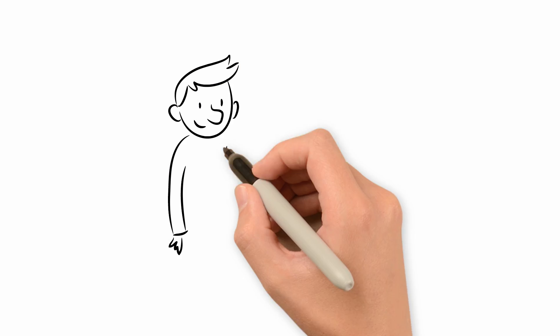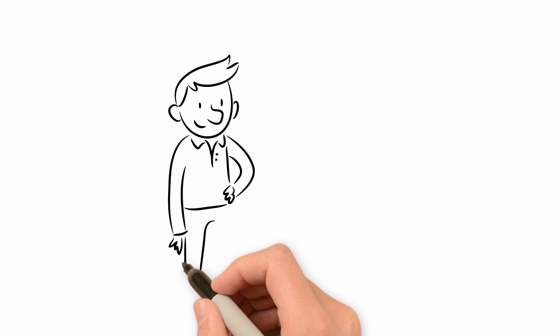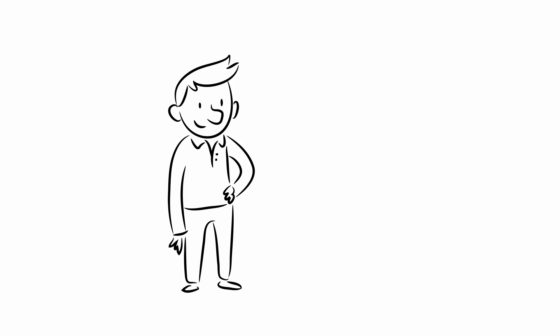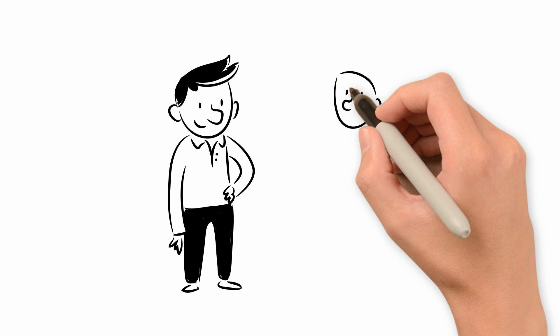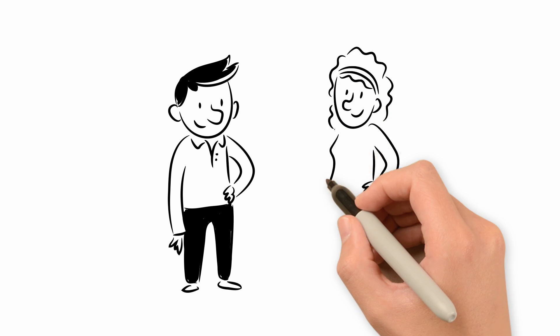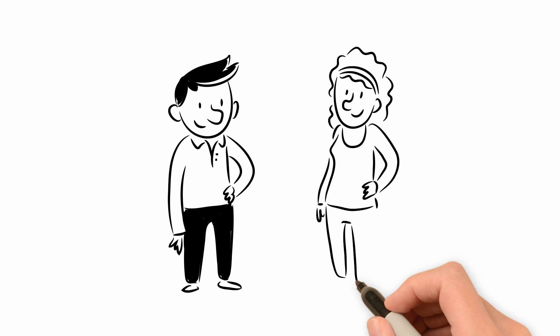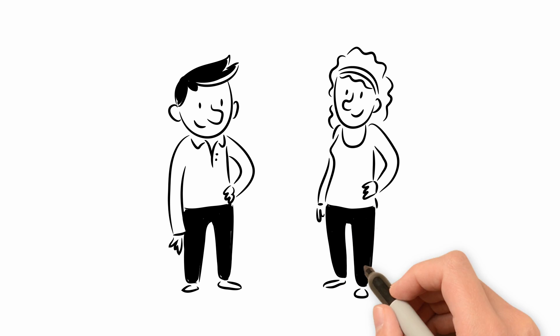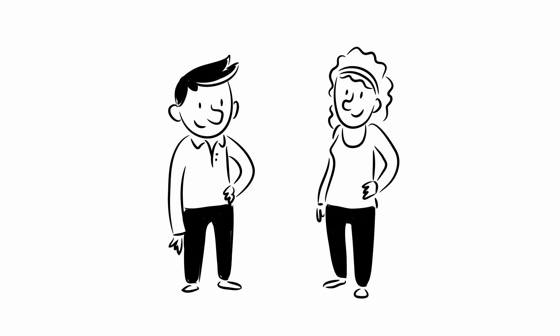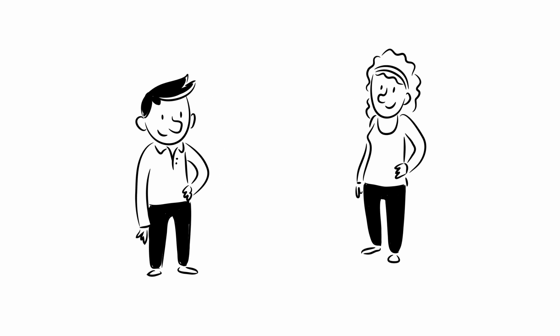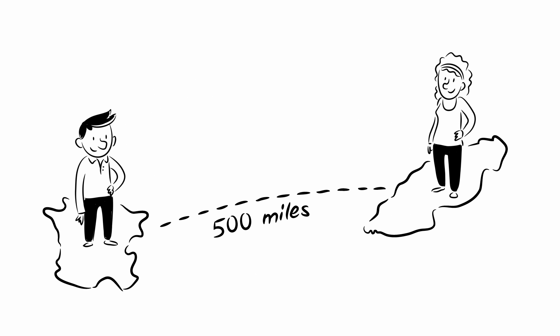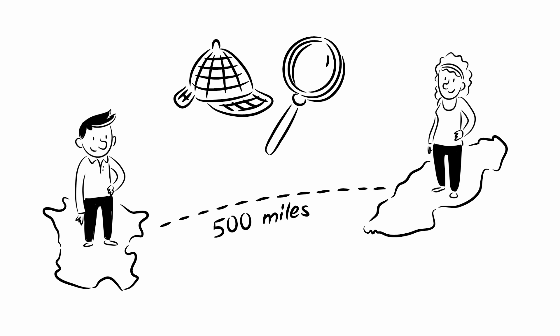This is Bob. He works as an experimentalist in a systems biology project. This is Alice. She's a modeler in the same project. She does simulations of what theoretically should happen in the experiments. She works 500 miles away from Bob. They work together on a large and interesting research question.